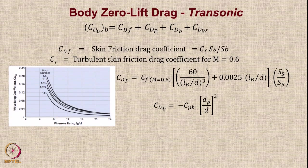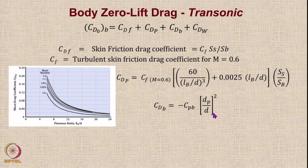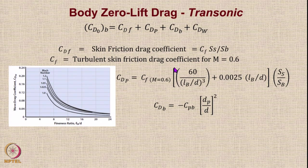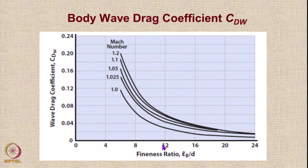For transonic flow, CDO body is a sum of four components: CDF, the skin friction drag coefficient which equals CF × SS/SB; CDP obtained from its expression; CDB from its expression; and CDW, the wave drag coefficient. With the fineness ratio you can get CDW for various Mach numbers. Once you have all four parameters you can get the value of CDO. The same graph for CDW has been redrawn in a larger frame for clarity, so you can easily read values of CDW for various Mach numbers given the fineness ratio.